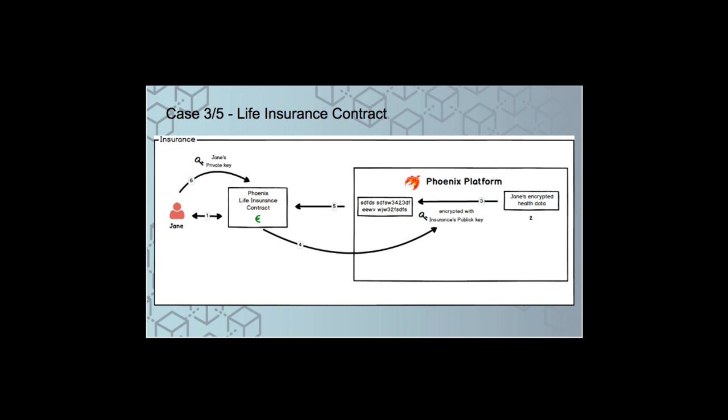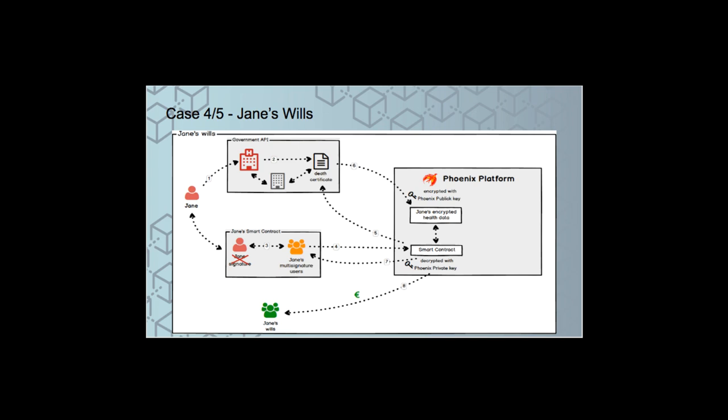How can the life insurance premium be cashed? People that were trusted by Jane that are part of the smart contract will ask to cash the premium of the life insurance contract to the Phoenix platform. Phoenix platform will connect through an API to the government services in order to retrieve the trusted and verified James death certificate.